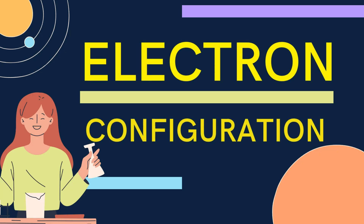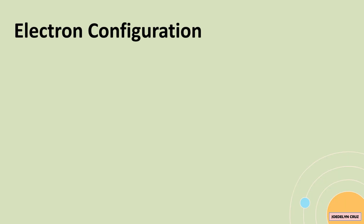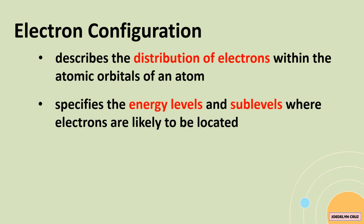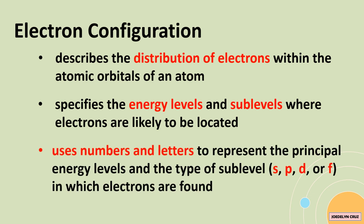Electron configuration is a shorthand notation that describes the distribution of electrons within the atomic orbitals of an atom. It specifies the energy levels and sublevels where electrons are likely to be located. The notation typically uses numbers and letters to represent the principal energy levels and the type of sublevel in which electrons are found.